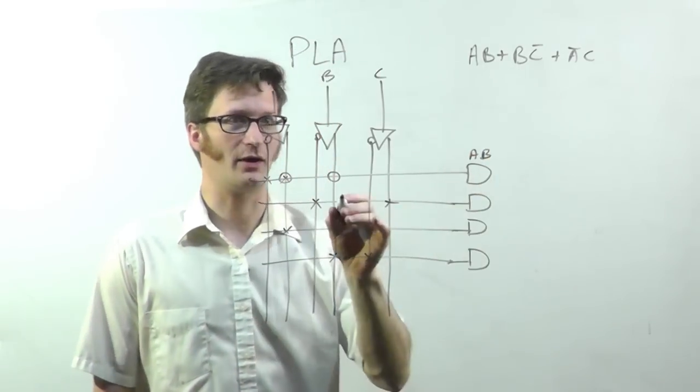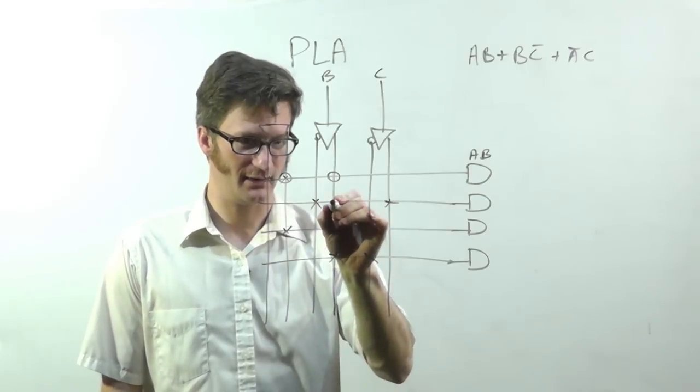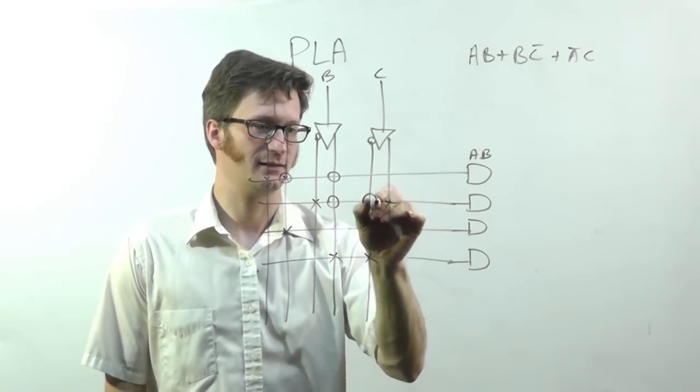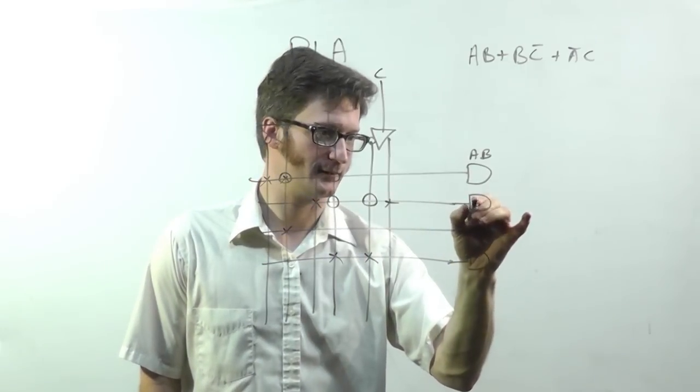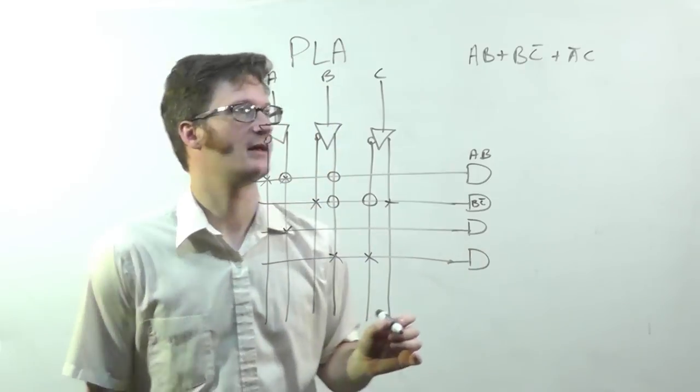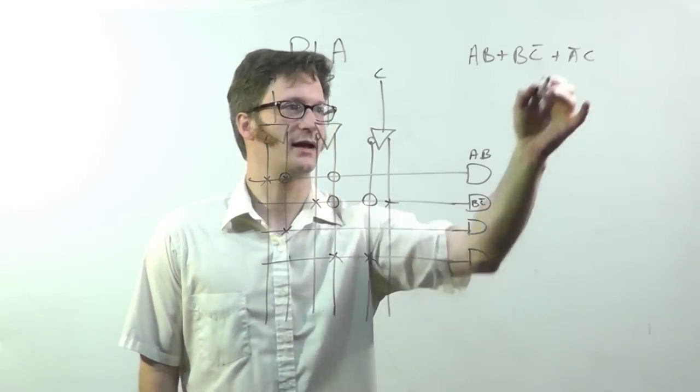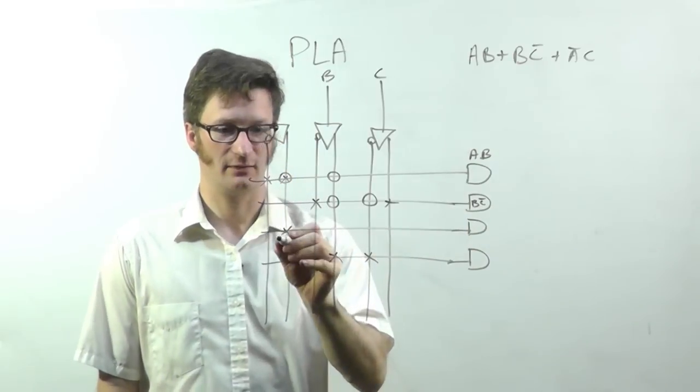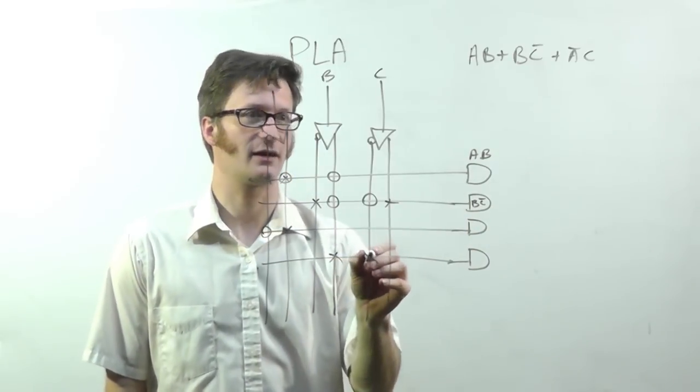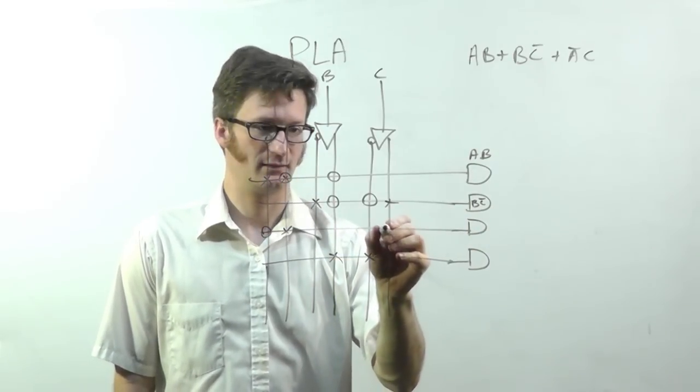And then BC bar would be BC bar there. And then A bar C would be connections here and here.